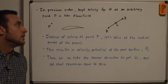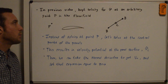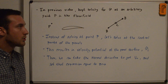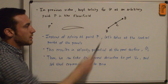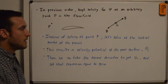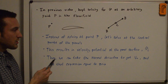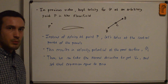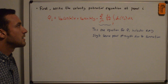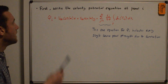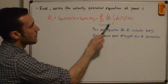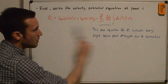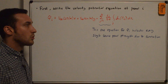In the previous building complex flows video, we kept solving for the velocity potential phi at an arbitrary point P in the flow field. Instead of solving at point P, let's now solve at the control points of the panels. The panel has two boundary points and a control point at the center. This gives the velocity potential at the panel surface phi_i. We take the normal derivative to get the normal velocity component at the control point — the airfoil surface — and set that expression equal to zero. So phi_i equals the same uniform flow term, but with r_ij instead of r_pj.